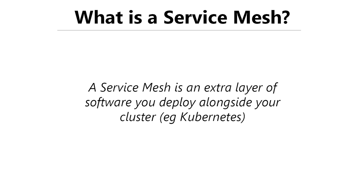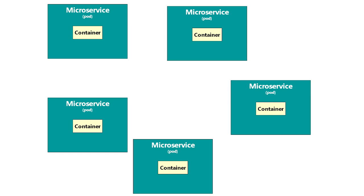Let's think about a standard microservice architecture running on Kubernetes. We're going to have a whole bunch of Kubernetes pods, and each pod typically contains a container. We can have multiple containers inside a pod, but it's quite standard to have a single container inside each pod. These containers are all networked together because we can use the service discovery mechanism inside Kubernetes to make network calls from any container to any other container.